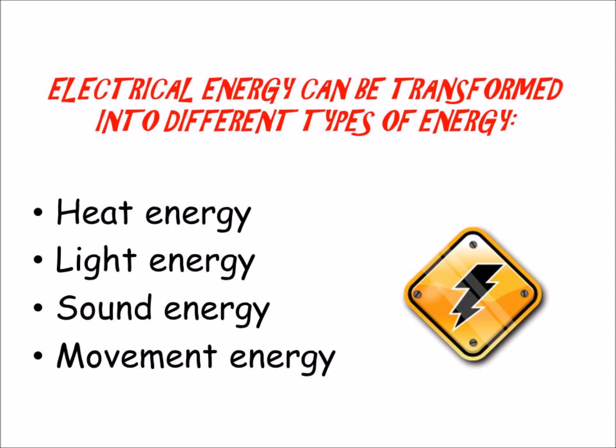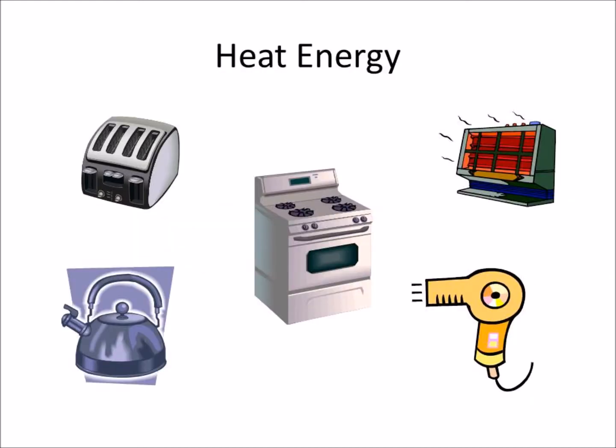Electrical energy can be transformed into different types of energy: heat or cool energy, light energy, sound energy, and movement energy. The toaster, the oven and the hairdryer transform electricity into heat energy. The fridge and the freezer transform electricity into cool energy.